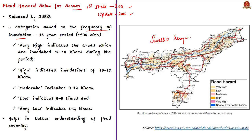The flood hazard map is classified into five different categories based on frequency of inundation during the 18-year period from 1998 to 2015. Very high indicates inundation 16 to 18 times; high indicates 13 to 15 times; moderate indicates 9 to 12 times; low indicates 5 to 8 times; and very low indicates 1 to 4 times during this 18-year period. This flood hazard atlas helps in better understanding of flood severity.